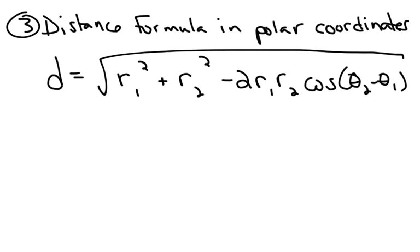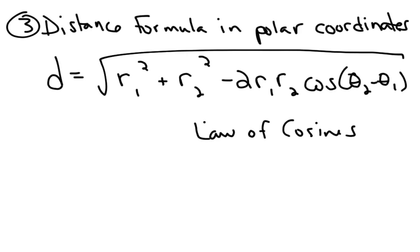Another problem that ends up on the final is finding the distance between polar coordinates. It's an easy formula — it's actually the law of cosines. So in order to find the distance between two polar coordinates, use the law of cosines. I'll put this formula on the formula sheet.